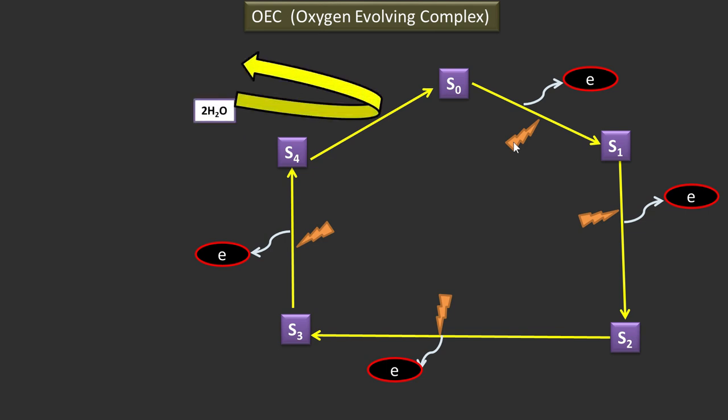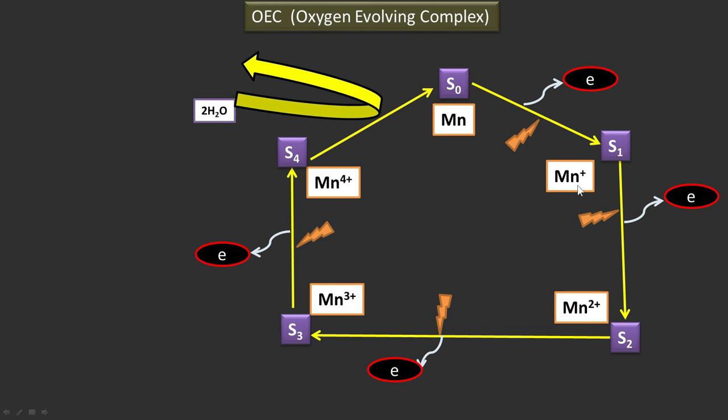When transition takes place from S4 to S0, two molecules of water come in to get photo-oxidized. If we take S0 as Mn, then after releasing one electron it becomes Mn+, releasing two electrons Mn2+, and subsequently after releasing four electrons it becomes Mn4+.